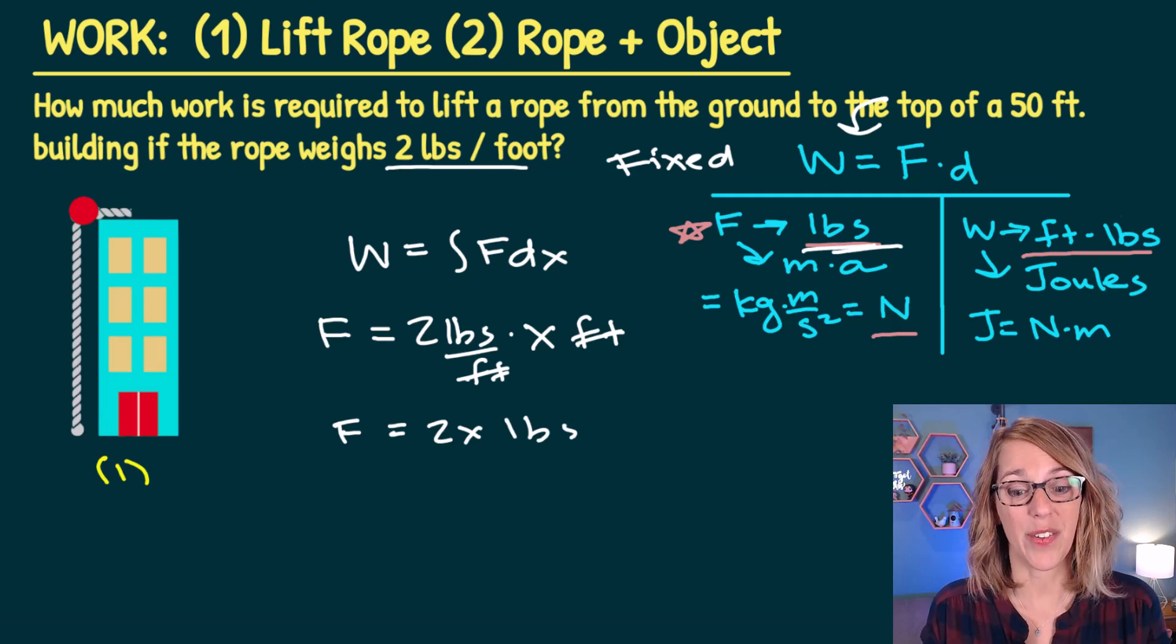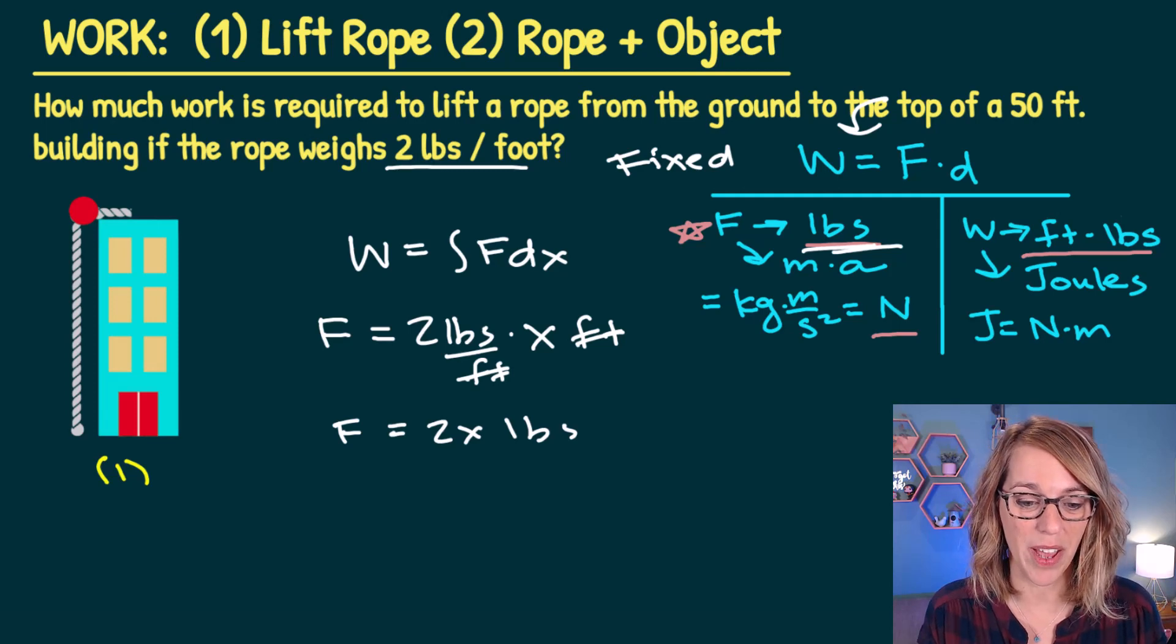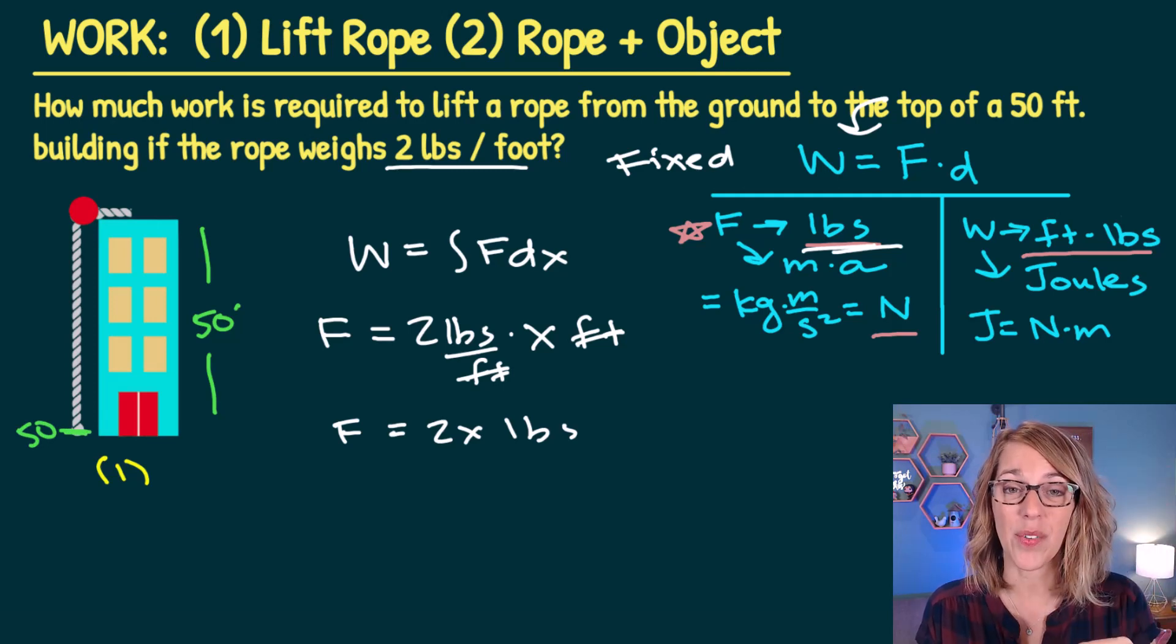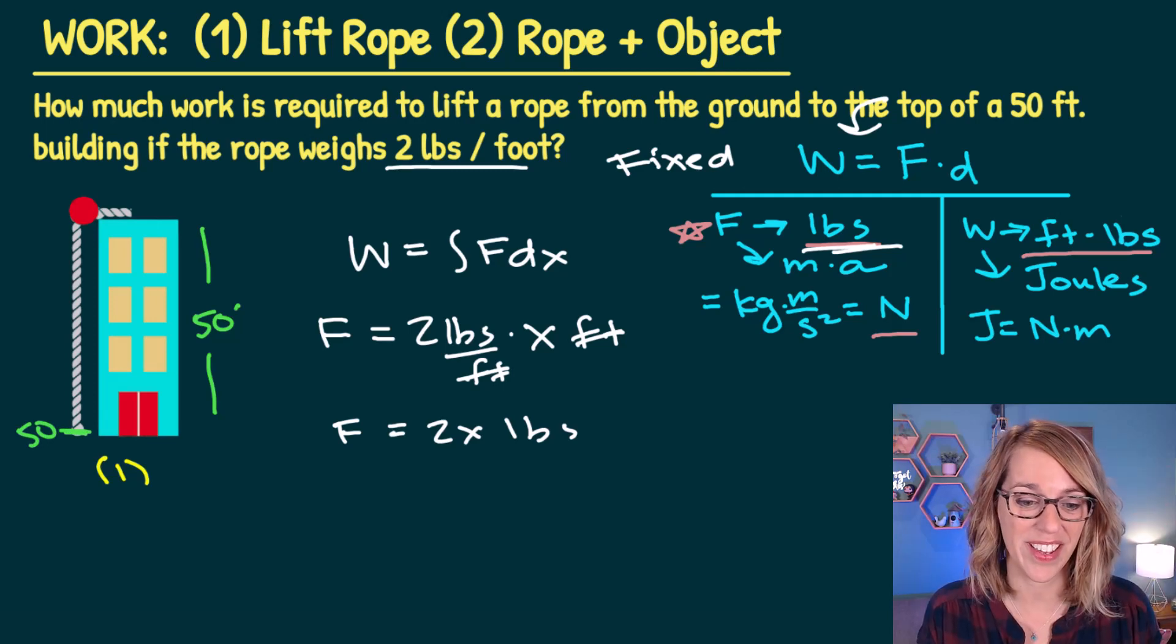We also need those limits of integration. x refers to the length of the rope that's being pulled up. I know that my building is 50 feet high. So as I look at the length of rope, I can see that at the very bottom of this rope here, I need to move that up 50 feet.